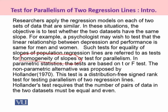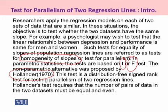In parametric statistics we can make use of the T or F test to compare the equality or homogeneity of slopes. Whereas if the parent populations from which the samples are drawn are non-normal, we can make use of the non-parametric alternative approach proposed by Hollander in 1970. This test is a distribution-free test based on the Wilcoxon signed rank test, using which we can test the homogeneity of slopes of two regression models.